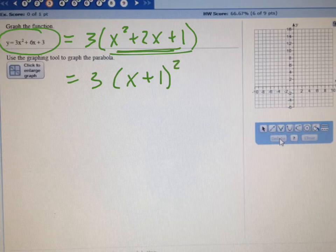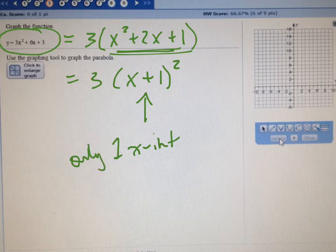It's x plus 1 squared. Now, that means, it depends on how much you've learned about this yet, but what that basically means is that there's only one x-intercept, and that one x-intercept is negative 1.